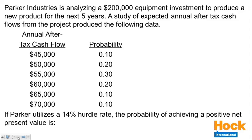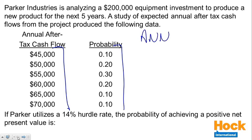What we have to do here is go through a couple of steps. We're given these different probabilities for different cash flows that they're projecting. So what we need to figure out is what is the minimum cash flow they need per year in order for this project to break even — in order for it to have a positive net present value. So what we need to do is take this $200,000 investment amount and determine what annual cash flow will result in a positive net present value, using an annuity.